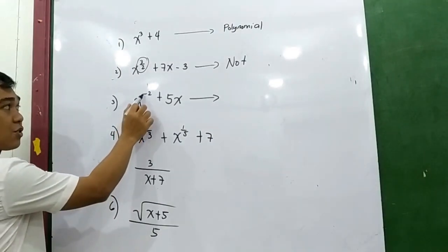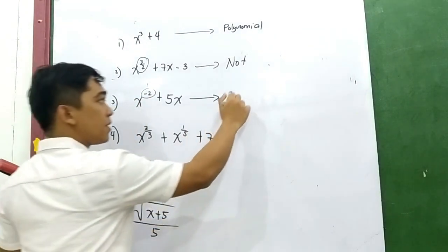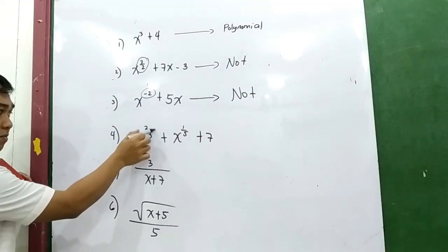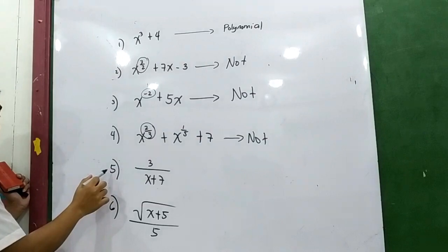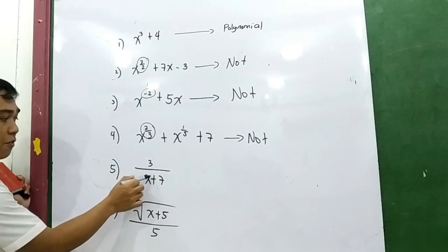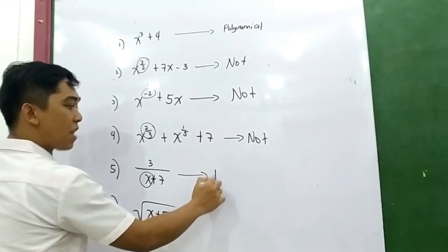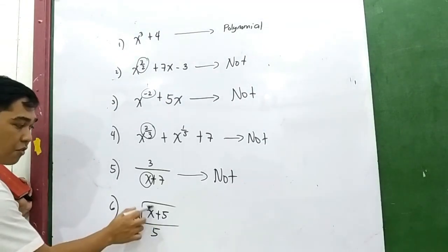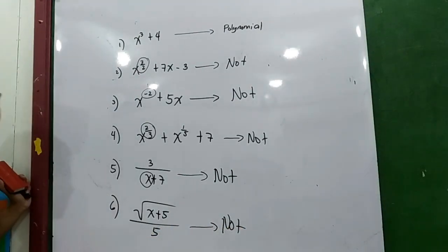Number 3: x raised to negative 2 plus 5x — the exponent is negative, so this is not a polynomial. Number 4: x raised to 2 over 3 — not a polynomial. Number 5: 3 over (x plus 7) — we have a variable in the denominator, so not a polynomial. Number 6: square root of x plus 5, all over 5 — the variable is inside the radical sign, so this is not a polynomial.